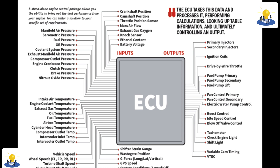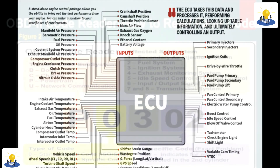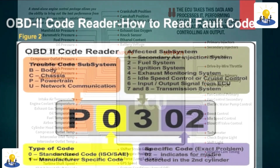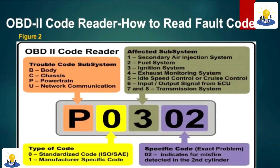With modern engine management, the first fault diagnosis step for a vehicle technician is to access fault codes from the ECU memory. These are often stored as five-digit alphanumeric codes beginning with P, B, C, or U, followed by four numbers. Details of these codes and their descriptions can be seen in this figure.